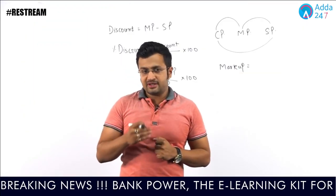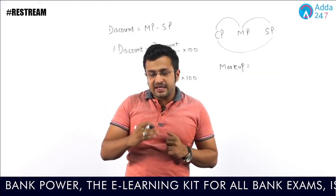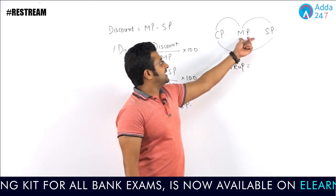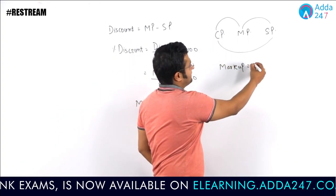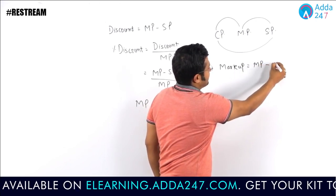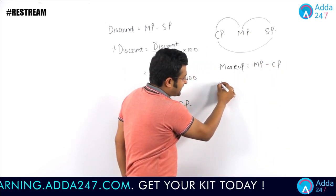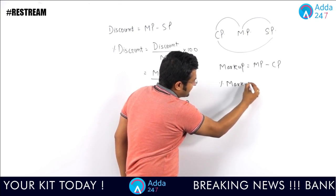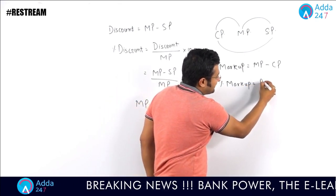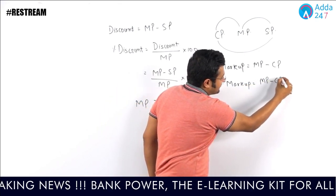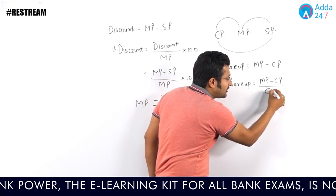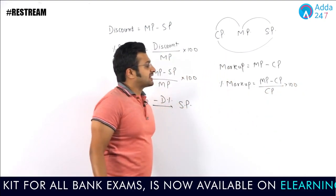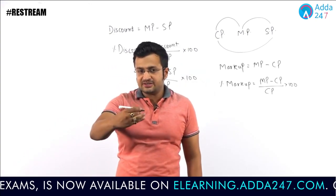What about the difference between cost price and mark price? A shopkeeper purchases an article and marks it above the cost price, so mark price will be more than cost price. Markup is nothing but mark price minus cost price. Percentage markup is nothing but (mark price minus cost price) as a percentage of cost price.